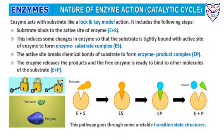Let us understand the nature of enzyme action. An enzyme acts on a substrate just like lock and key — for every lock there is a particular key, and similarly for every enzyme there is a particular substrate. The substrate binds with the enzyme to form an enzyme-substrate complex, which then gives an enzyme-product complex. The active site breaks the chemical bonds of the substrate to give us the product. After this, the enzyme releases the products and the free enzyme is ready to bind to other molecules — the enzyme remains unchanged throughout.